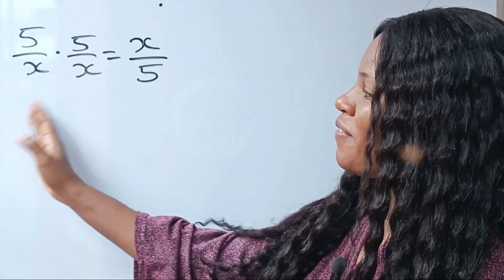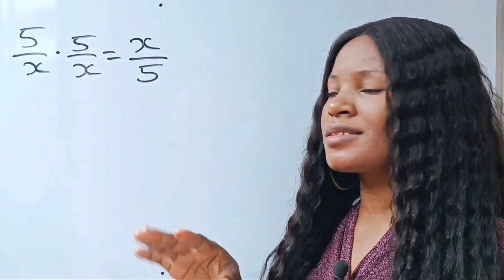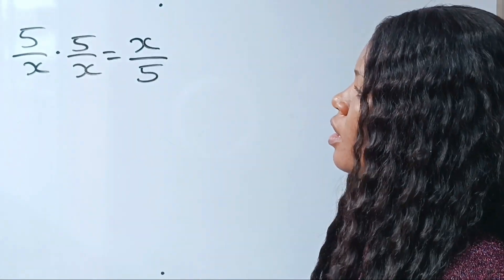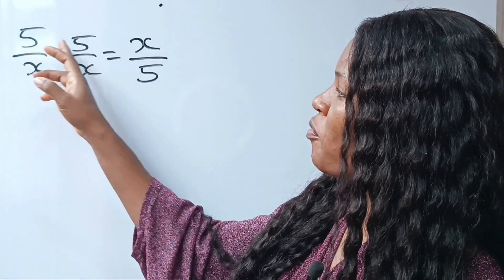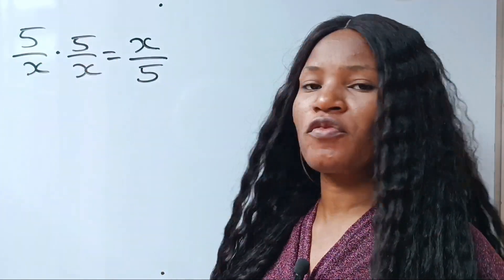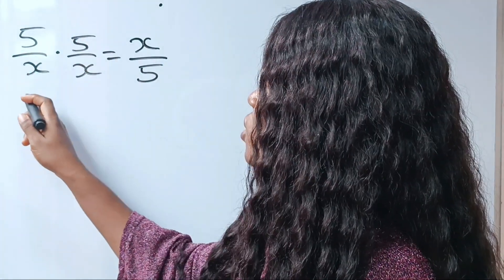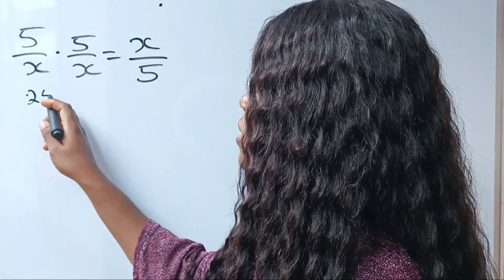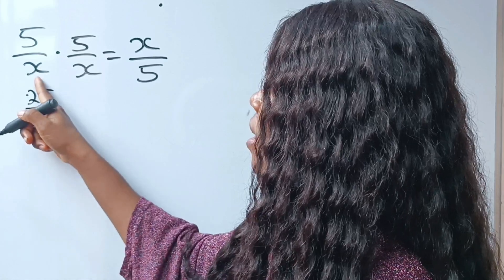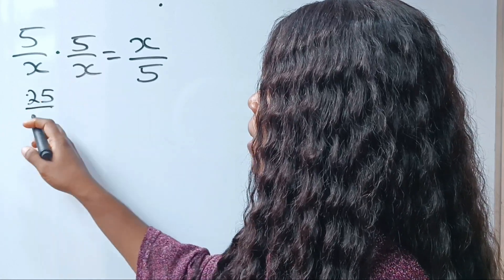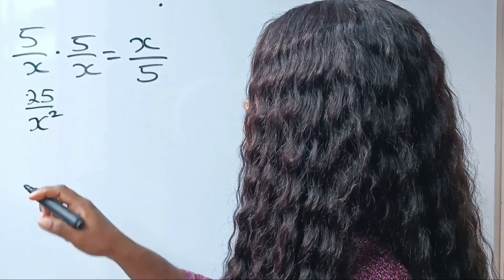Let's find the three values of x. To do that, 5 multiplied by 5 will give us 25. So we have 25 divided by 5, multiplied by 5, will give us x squared.